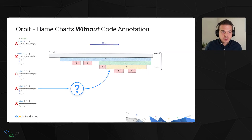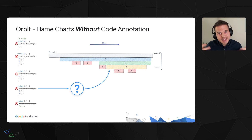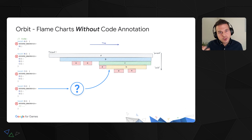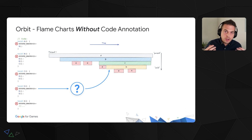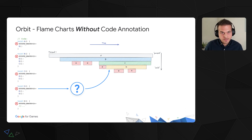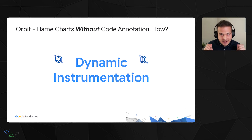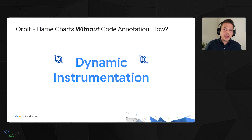How can we generate those flame charts? The easiest way would be to modify code. However, to instrument a new function, you would have to shut down your game, change the code, recompile, relink, redeploy, and relaunch — this can easily take 15 minutes on a big project. Also, performance problems in games can be highly contextual, and you might need to reproduce a long sequence of events to trigger a performance bottleneck. Another problem is that you might be interested in profiling modules for which you don't have source code. Orbit's answer is dynamic instrumentation — it allows us to generate flame charts without having to modify a single line of code, with virtually no iteration time, and you don't even have to relaunch your game.